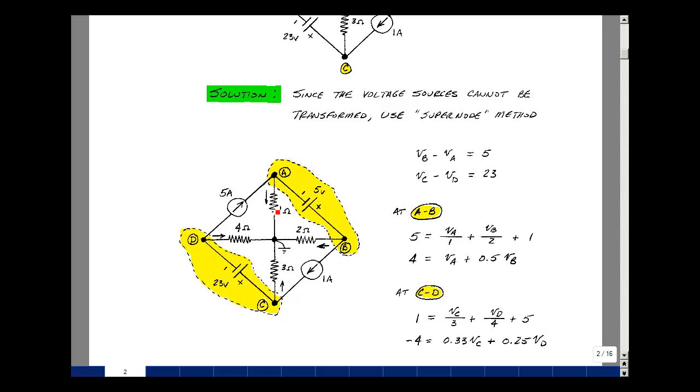5 amps would equal V sub A divided by 1, V sub B divided by 2, and then 1 amp. Put the one on the other side of the equation, so you get minus 1 plus 5 is 4, V sub A, and then a half times V sub B.